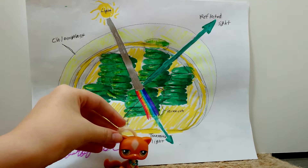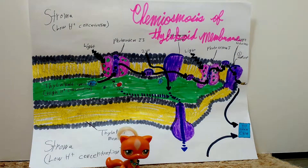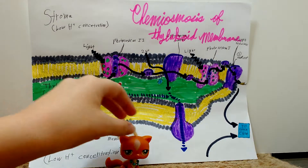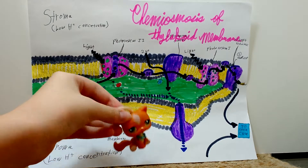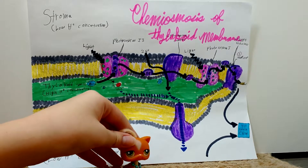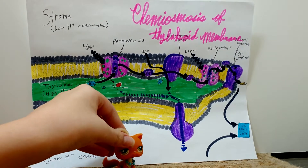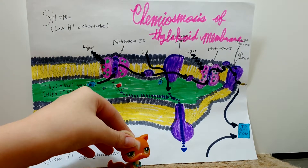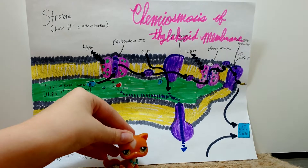Now let's take a closer look at exactly how this happens. Here is a more detailed picture — chemiosmosis of the thylakoid membrane. This is basically just a more detailed description of what's going on. Photosynthesis makes ATP and Pi with light energy. As I said before, it happens at chloroplasts. This is also called the chloroplast electron transport chain.